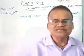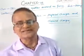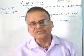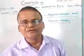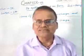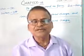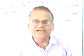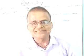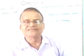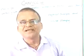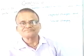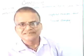जैसा कि हम लोग जानते हैं कि किसी भी पदार्थ में दो तरह के गुण पाए जाते हैं: physical property and chemical property, अर्थात भौतिक गुण तथा रासायनिक गुण। Physical property का अवलोकन हम लोग देख करके और छू करके करते हैं, जैसे color, smell, physical state, melting point, boiling point, etc.